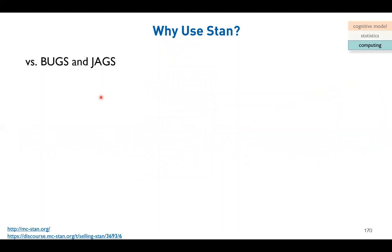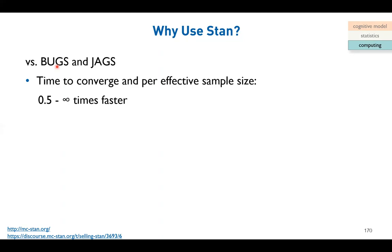One motivation: why do we use STAN? I told you my personal story - we began with maximum likelihood, then switched to JAX, then to STAN. Both JAX and WinBUGS are previous software trying to do MCMC approximation. Why STAN instead of the others? In terms of time to converge and effective sample size, STAN is a lot faster. I have models that cannot even be run on JAX but can be executed in STAN.